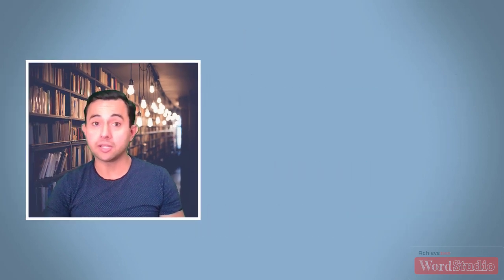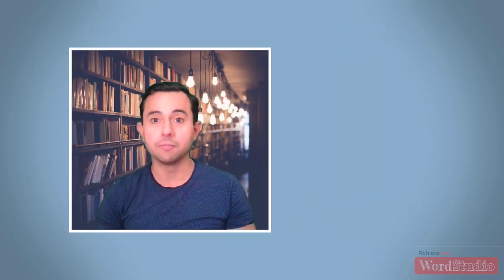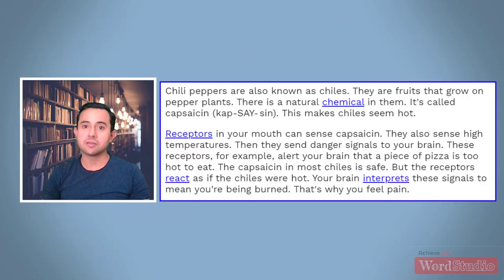Now that we have a good idea of what a summary should and shouldn't contain, let's look at a passage from an article and then evaluate a summary of the passage together. The passage is from an article about spicy foods called Hot Stuff.